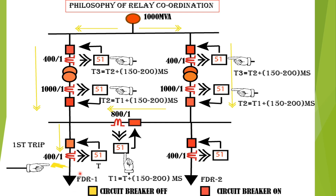Consider that a fault occurs at feeder 1. The relay connected from the CT secondary side of the feeder takes time T to send a trip signal to the circuit breaker of that feeder. After time T, this relay sends a trip signal to the feeder circuit breaker and the fault is isolated.